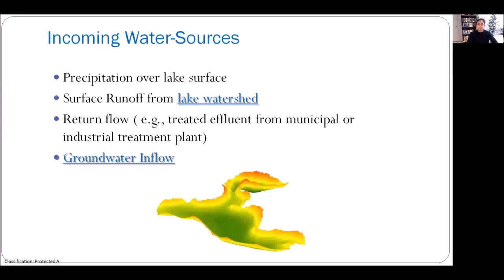Let's explore the incoming water sources. There are four different water sources. The first is precipitation falling over the lake surface. The second is surface runoff coming from the lake watershed — every lake has a watershed, which is a certain area from where runoff is coming into the lake. The third component is the return flow — when someone applies for a water license to divert water from a lake, the license often comes with an amount of return flow that must be diverted back into the water body. The fourth component is groundwater inflow into the lake.